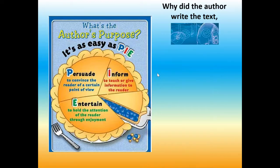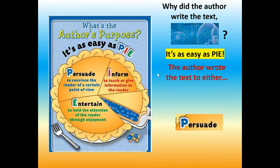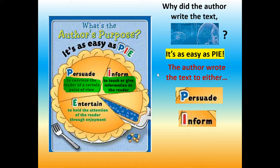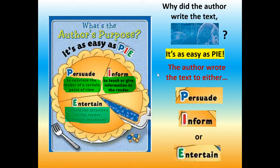So why did the author write the text Jellies? It's as easy as PIE — P-I-E. Each letter in the acronym PIE stands for something. P: persuade — to convince the reader of a certain point of view. I: inform — to teach or give information to the reader. E: entertain — to hold the reader's attention through enjoyment.